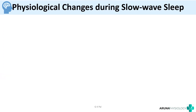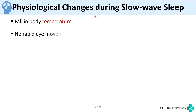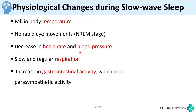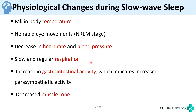During slow wave sleep, as we fall asleep our body temperature begins to fall. There will be no rapid eye movement in this NREM stage. There will be a decrease in heart rate and blood pressure. Respiration will be slow and regular. There will be an increase in gastrointestinal activity due to increased parasympathetic activity, and decreased muscle tone. A useful order to remember: body temperature, eyes, chest area (heart rate and BP), respiration, stomach (GI activity), and finally muscle tone.